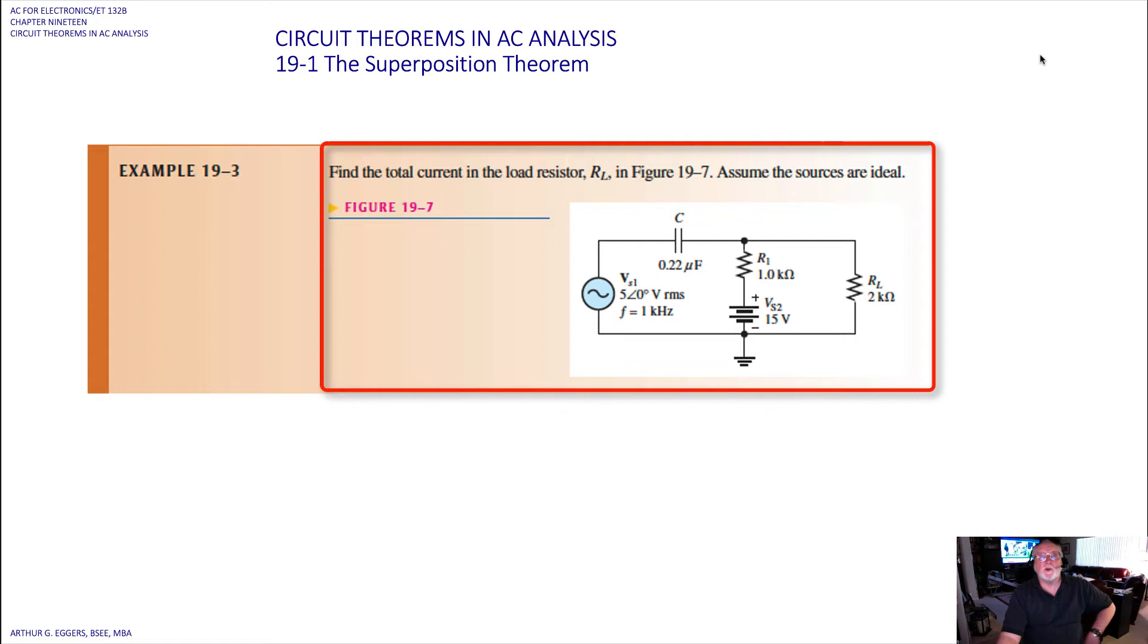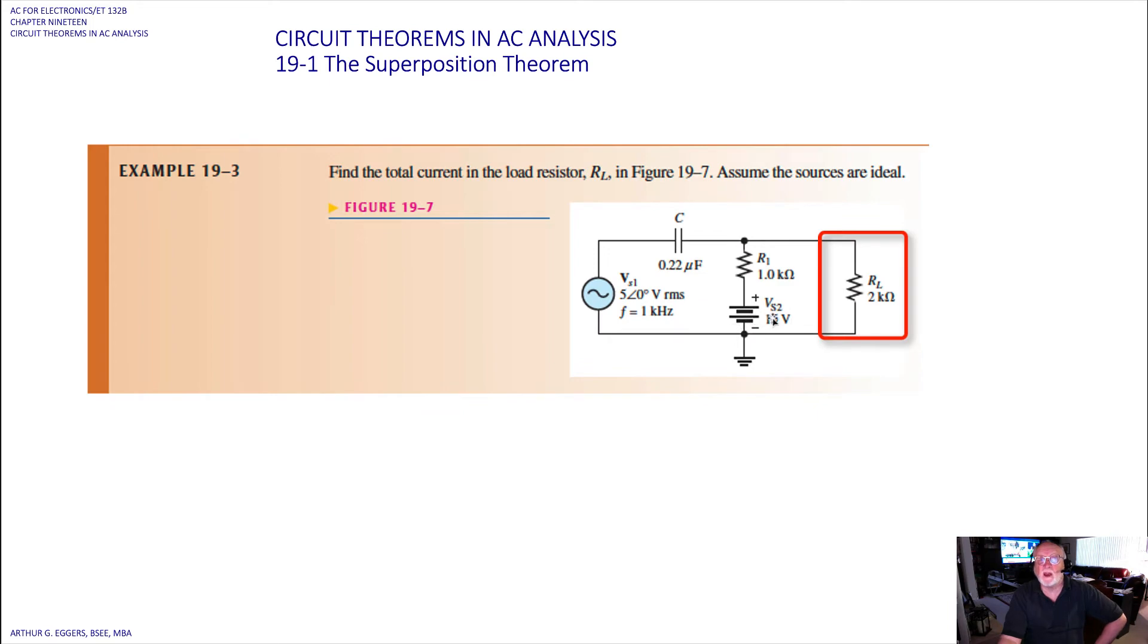In the next one, we need to find the total current then in the load resistor and assume the sources are real. So we've got two resistors here. We've got our load resistor, 2k ohms. We've got resistor one then in the circuit in series with the capacitor. We've got a source over here that's a DC source of 15 volts. And we have a source over here, number one, that's an AC source, 5 at 0 degrees in an RMS value, and it has a frequency of 1k hertz.